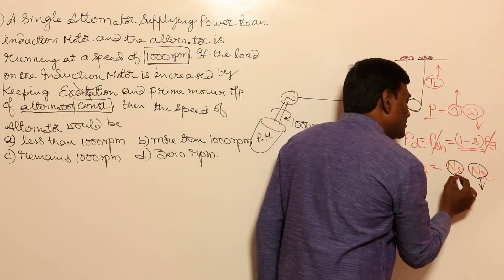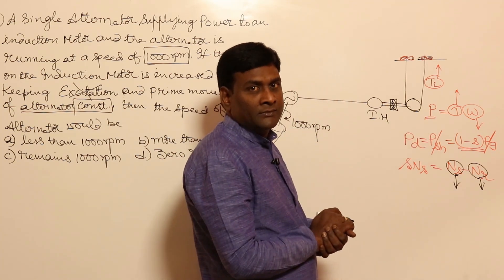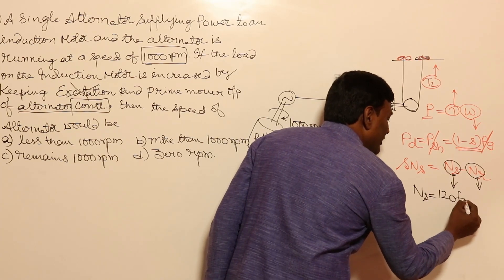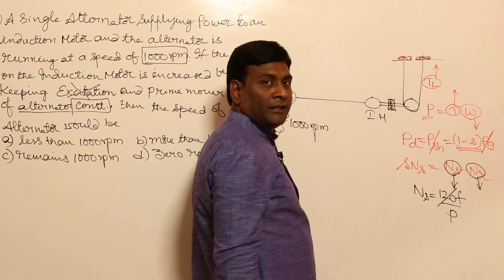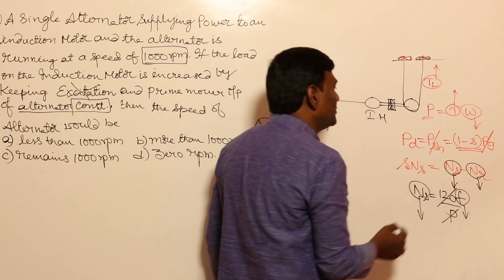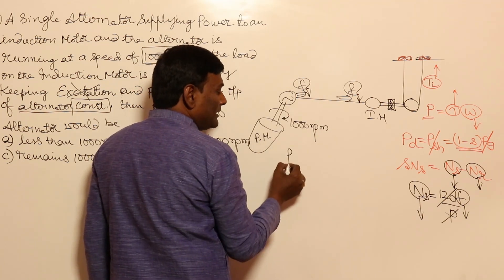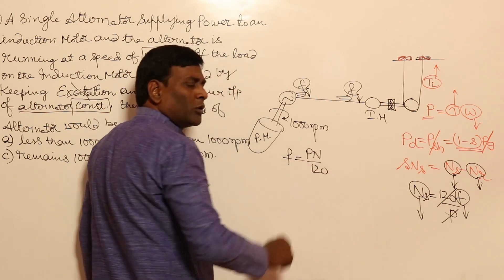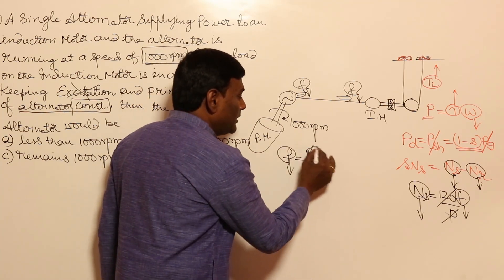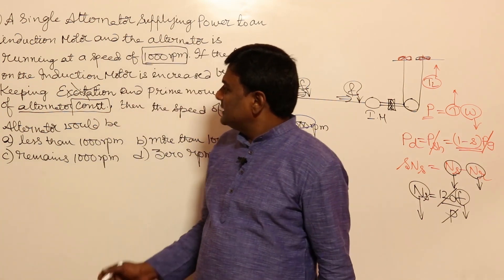For a given slip speed, if N_r (rotor speed) is reduced as torque increases, then this slip speed quantity must also be reduced. That means N_s (synchronous speed of the induction motor) must also be reduced. Since N_s = 120f / P, and the number of poles is constant, the supply frequency must be reduced. A reduced input frequency means the output frequency of the alternator must be reduced.